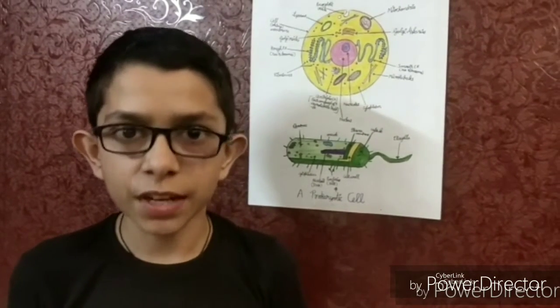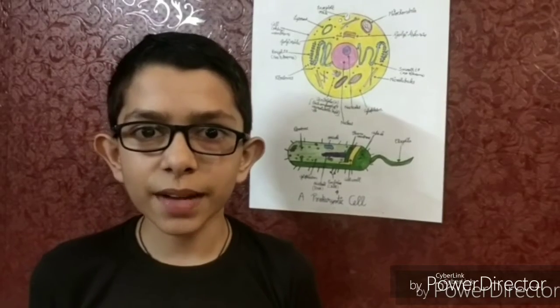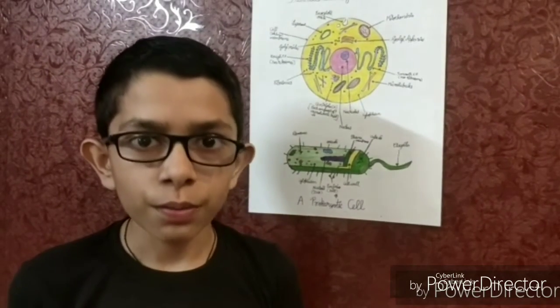My next video will be a detailed video on the nucleus of the cell. So now it is time for the info box. Today's info box is: do you know the smallest cell is the mycoplasma and the largest cell is the ostrich egg? Now I will be asking a question from all of you. Do you know which is the longest cell? Do let me know in the comment section below. Till my next video, stay home, stay safe, stay healthy, and easy learn with Vishisht. Thank you.